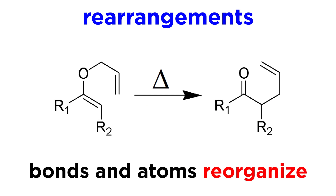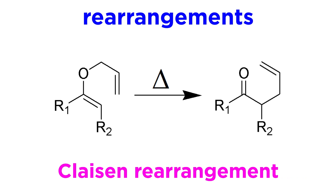And finally, with rearrangement, a molecule will undergo a reorganization of bonds and atoms to yield a different product. This can be a little more involved than the other three types, and there are many subclasses that all involve slightly different mechanisms. Here is an example of a Claisen rearrangement. As you can see, the atoms are all still there, but the bonds have shifted to give something completely different.